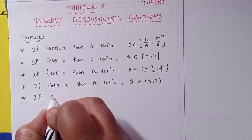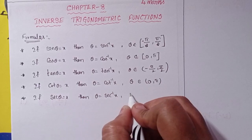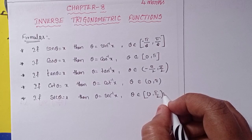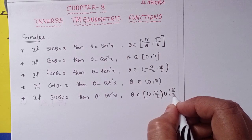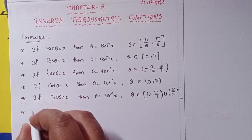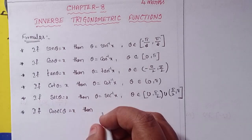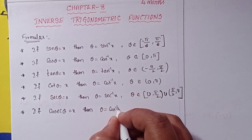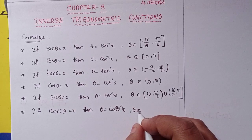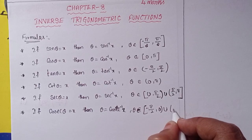If sec θ = x, then θ = sec⁻¹(x), where θ belongs to [0, π/2) ∪ (π/2, π]. If cosec θ = x, then θ = cosec⁻¹(x), where θ belongs to [−π/2, 0) ∪ (0, π/2].